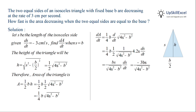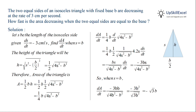Substituting dS/dt equal to minus 3, we get dA/dt equal to minus 3bs divided by the square root of 4s squared minus b squared. Now substituting s equal to b and simplifying, we get dA/dt equal to minus root 3 times b. That is, the area is decreasing at the rate of √3·b centimetres squared per second.